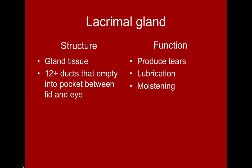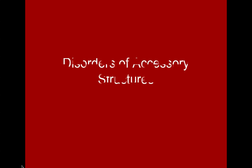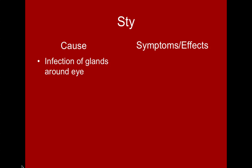We have a couple of diseases and disorders associated with these accessory structures. The first is a stye, caused by an infection of the glands around the eye. Sometimes the immune system handles it, but sometimes medications are needed. There is very painful swelling that puts pressure on the eye, making it a very painful condition.